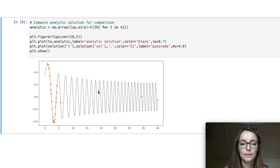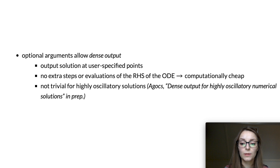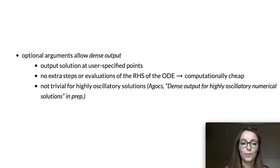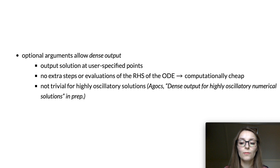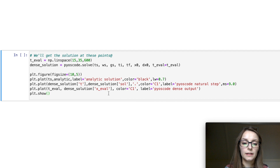It may be the case that you want the solution not only at the end of the integration range. An advanced feature of Pyoscode, like many initial value problem solvers, is dense output — the evaluation of the solution at user-specified points. This happens with no significant computational overhead, as no extra function evaluations are made when computing the dense output. By specifying the keyword argument t_eval, you can get a continuous-looking solution, shown in orange.